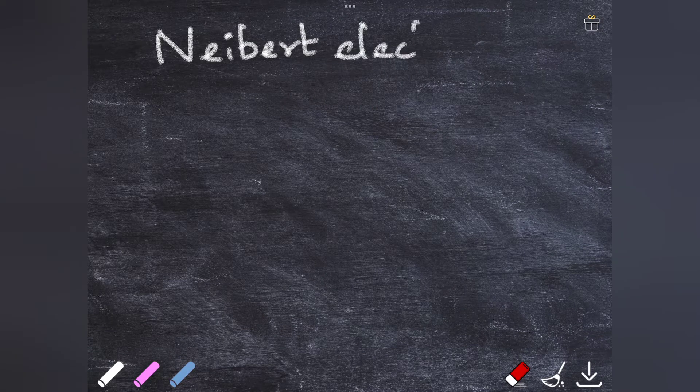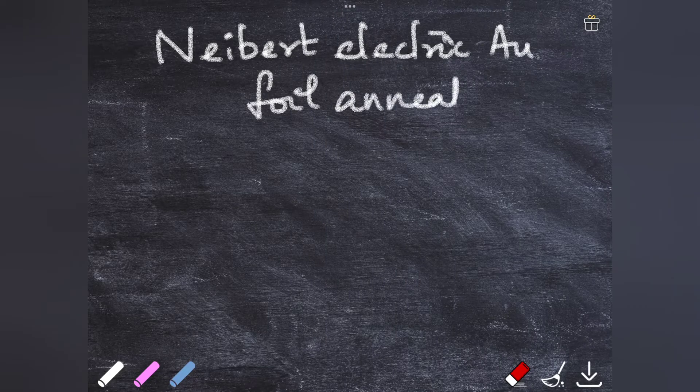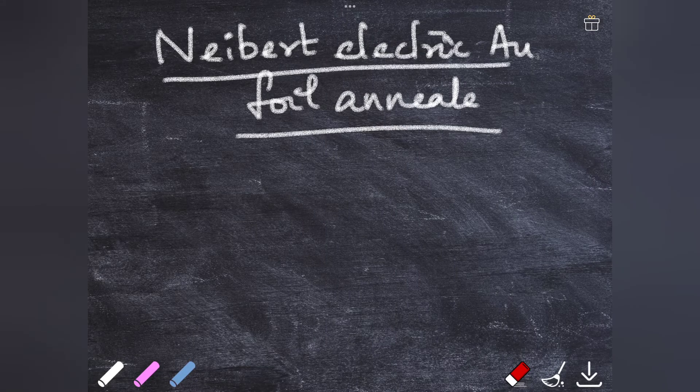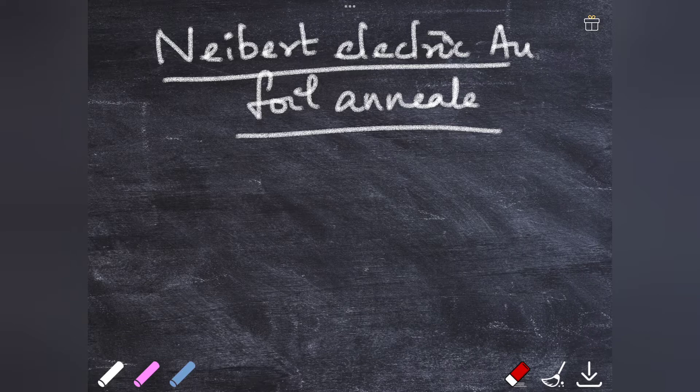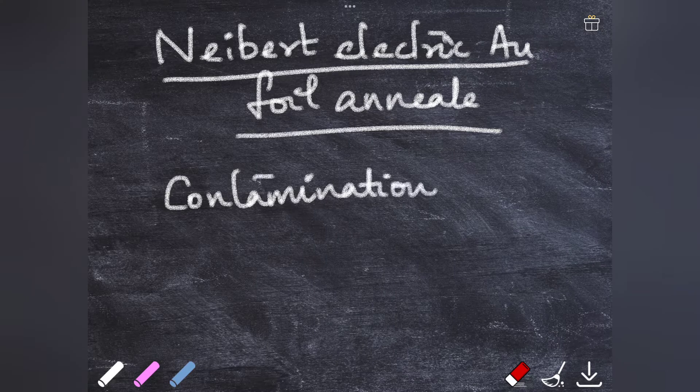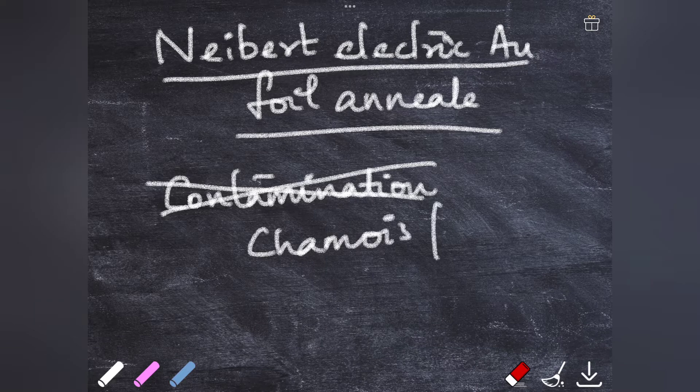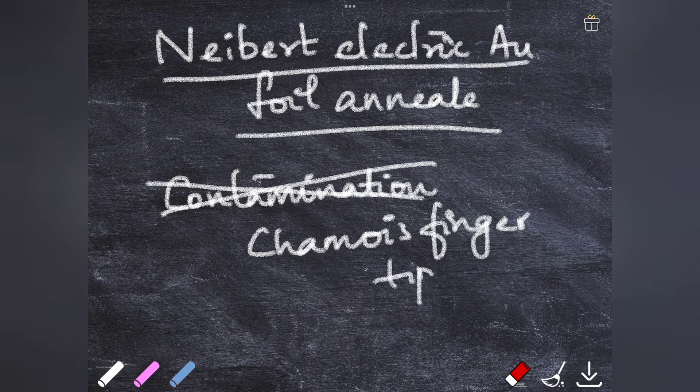The pellet sticking together and the non-uniformity is overcome in a recent electric annealer which is the Naybor electric gold foil annealer. Here it has an individual compartment for each piece of the gold foil. A small tip: if you want to decrease the contamination or prevent the contamination of the gold pieces, it's always advisable to pick them up by wearing a chamois fingertips.